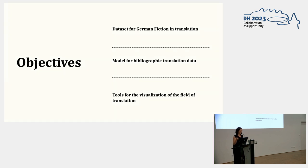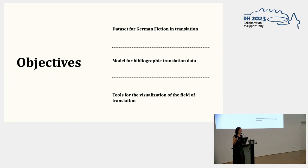My first objective was to curate the first dataset of German fiction in translation, extracted from the German National Library Catalog. Secondly, to design and test a model for the quantitative analysis of the bibliographic translation dataset, based on existing theoretical and methodological frameworks. And thirdly, to map the networks of transfer between language groups of German fiction in translation, using various visualizations such as geographic maps, network graphs, and simple frequency distributions.